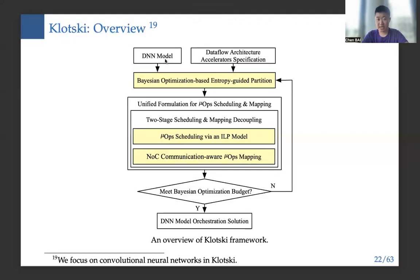Class-KDM accepts two inputs: the DL model and dataflow architecture accelerator specification. It then adopts a Bayesian optimization-based entropy-guided partition to partition the DL model into several μOPs. We formulate μOP scheduling and mapping via a unified formulation, and decouple scheduling and mapping through an ILP model and MLP model. Once the Bayesian optimization budget is met, we output the DL model orchestration solution.